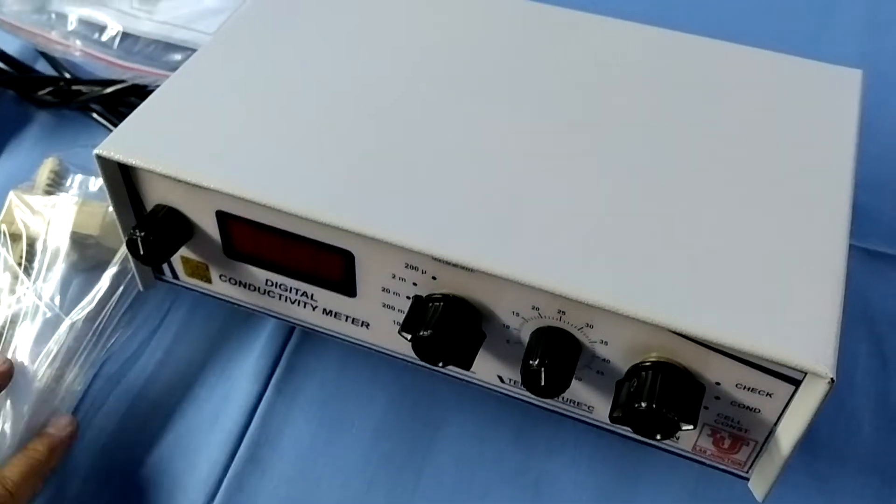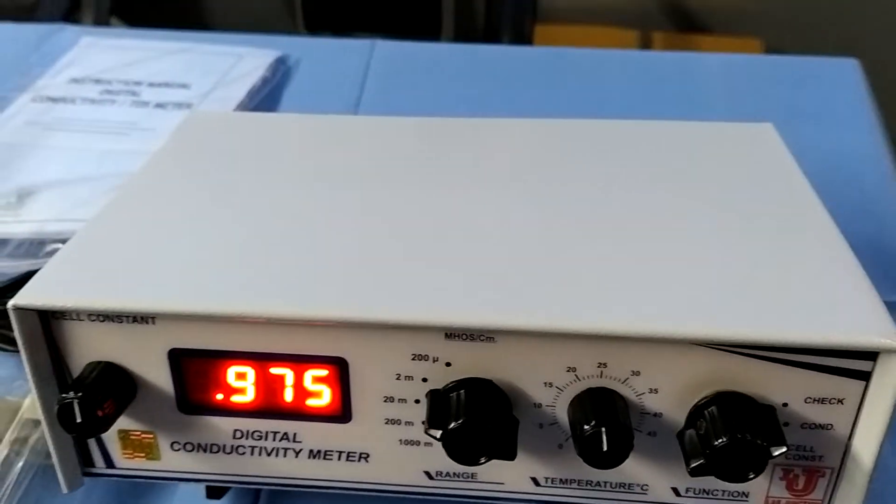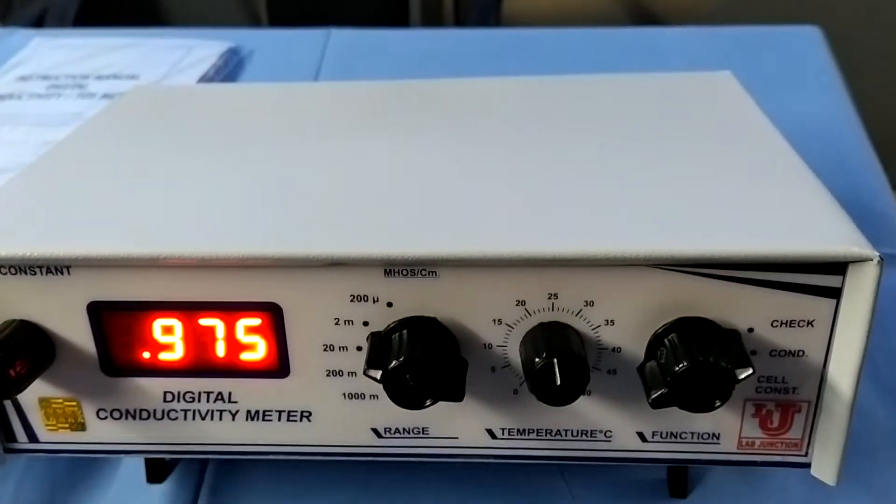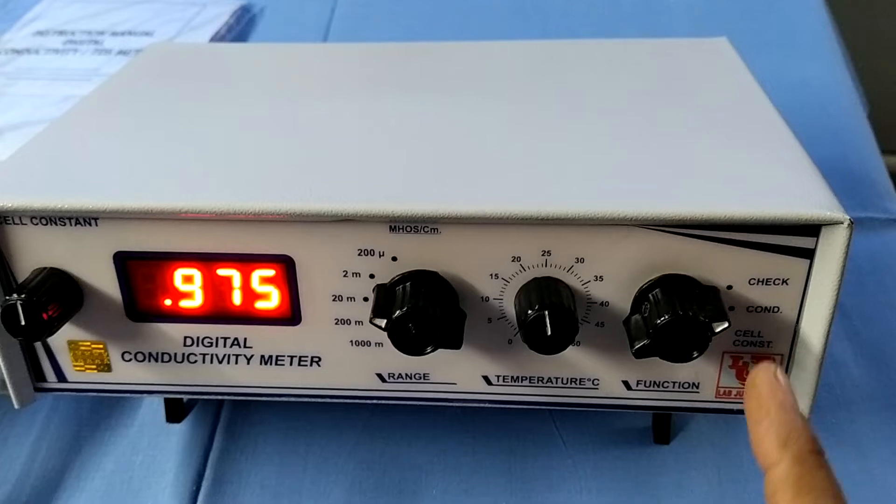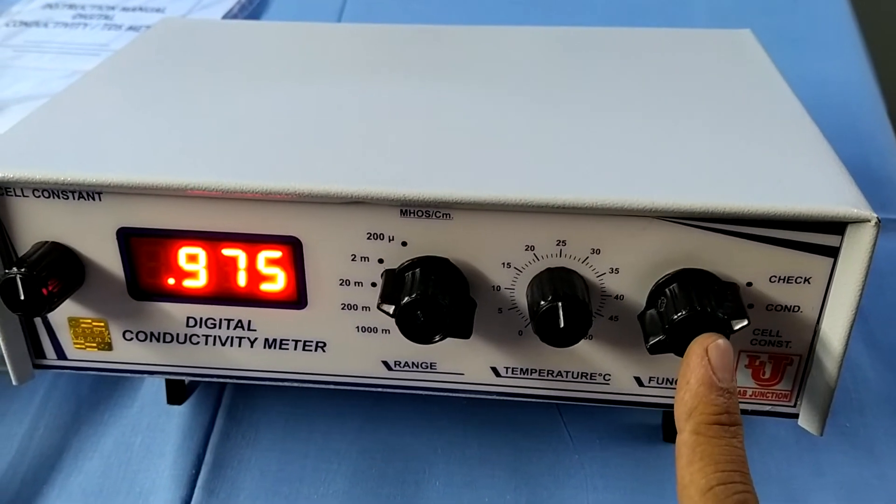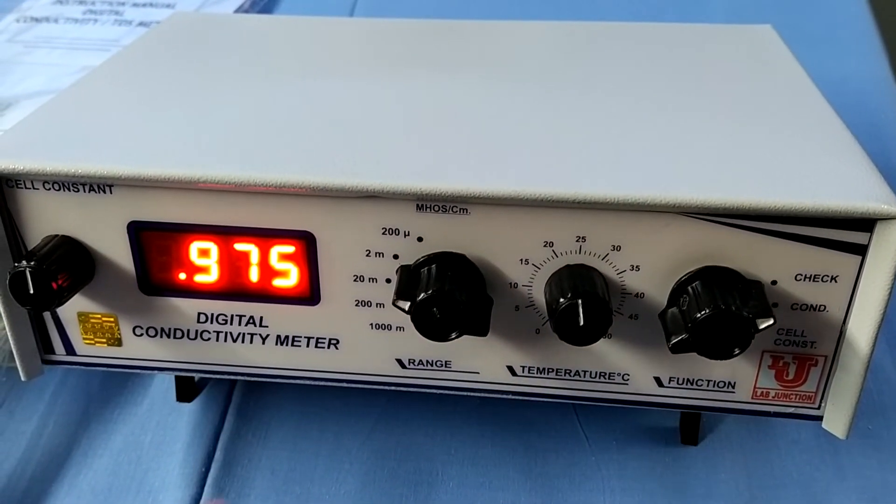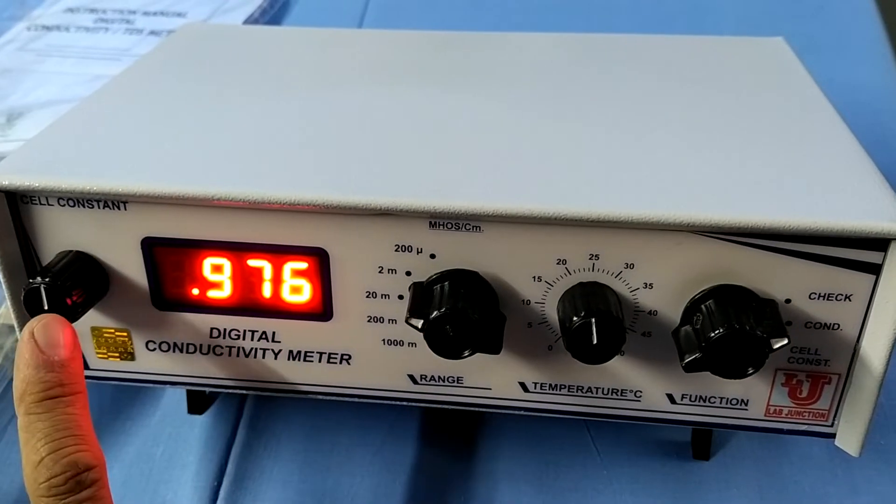Now, I am switching on the machine. First, there are four controls. Function control, temperature control, range switch, cell constant knob.